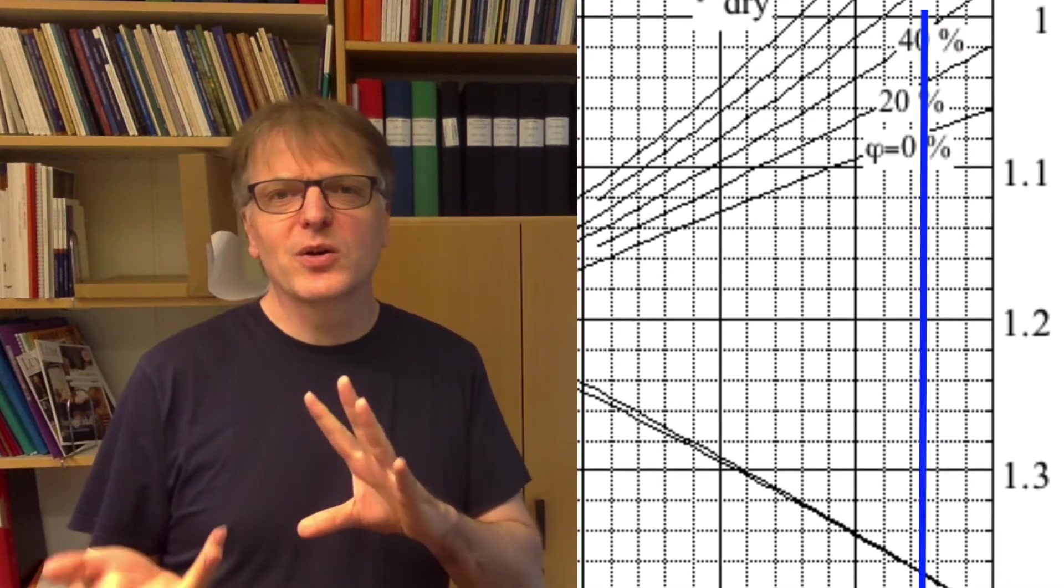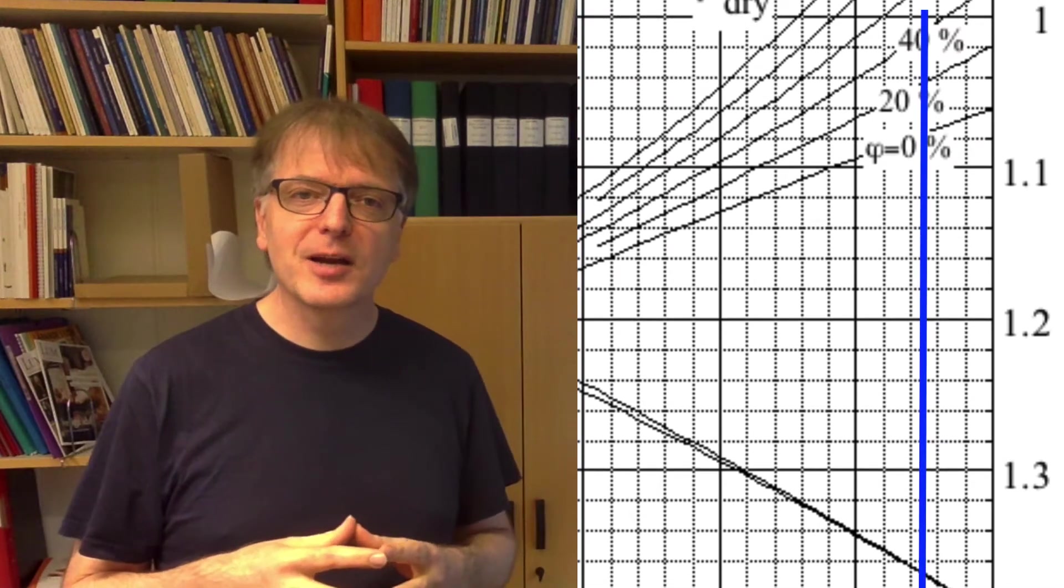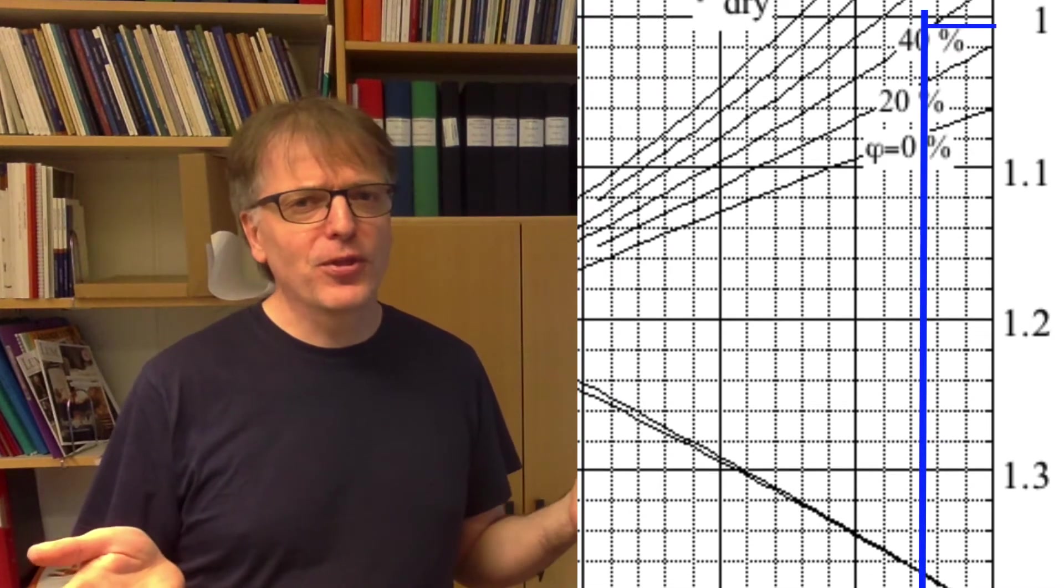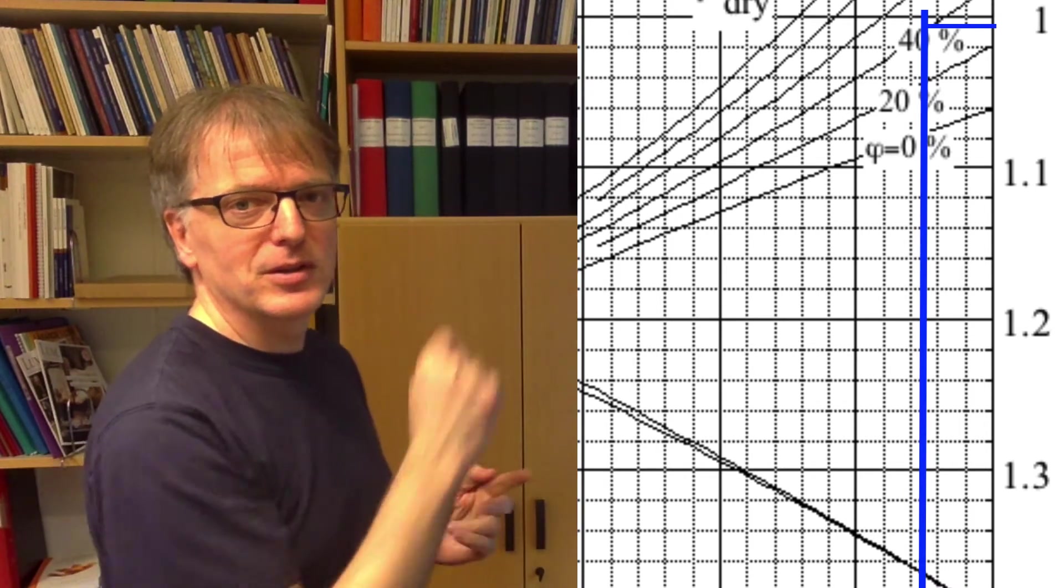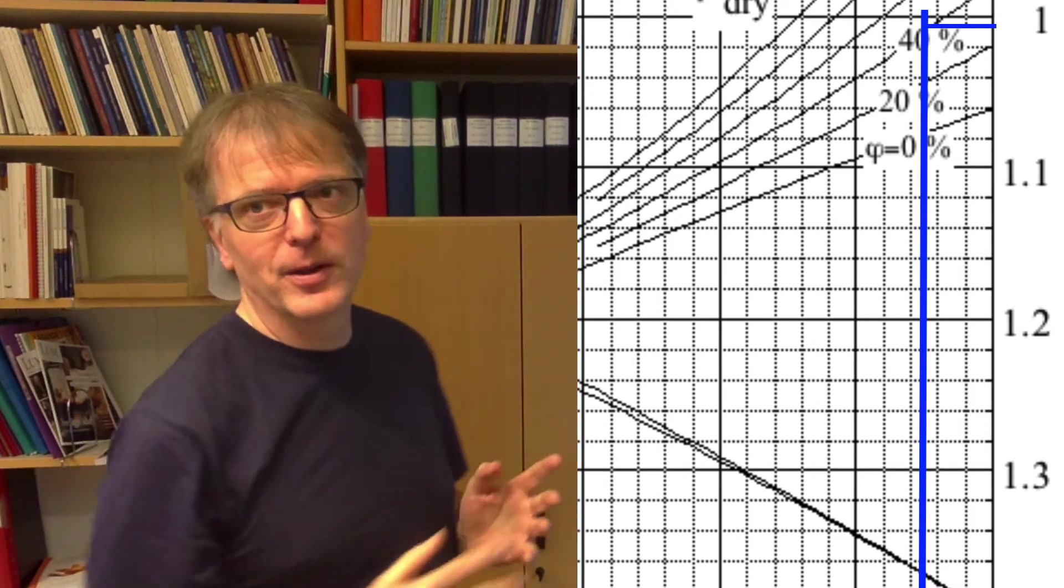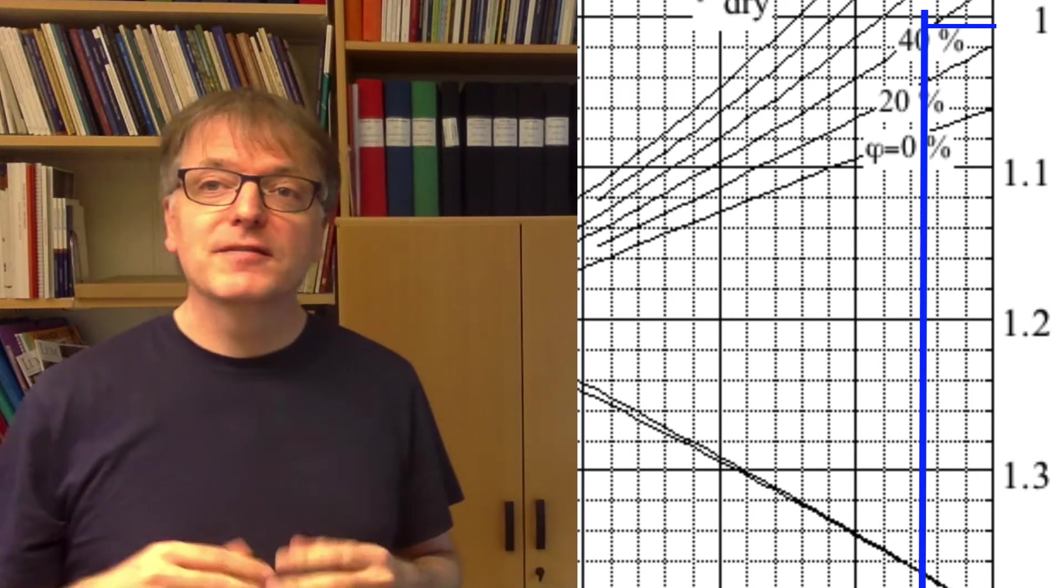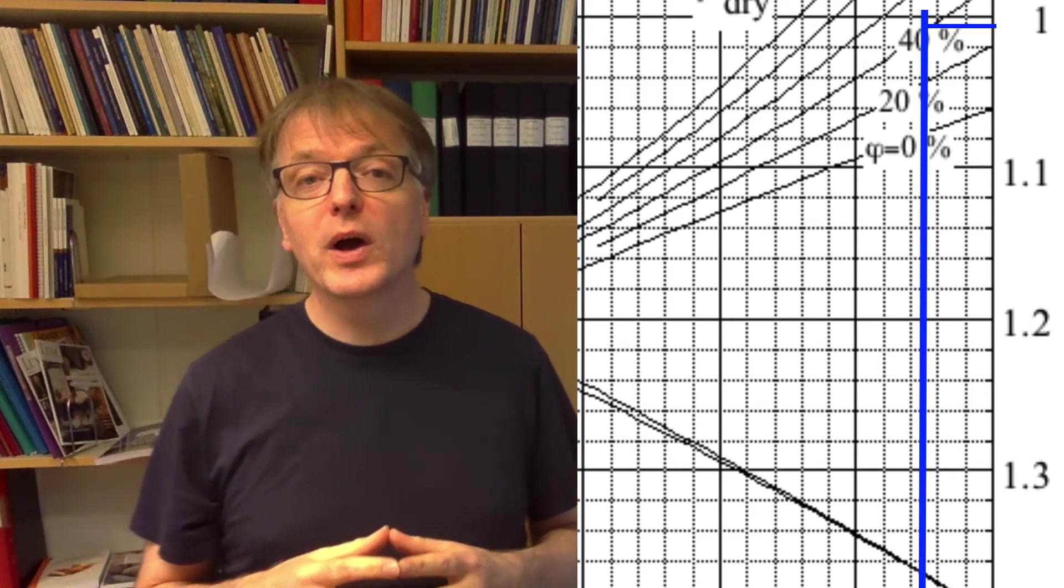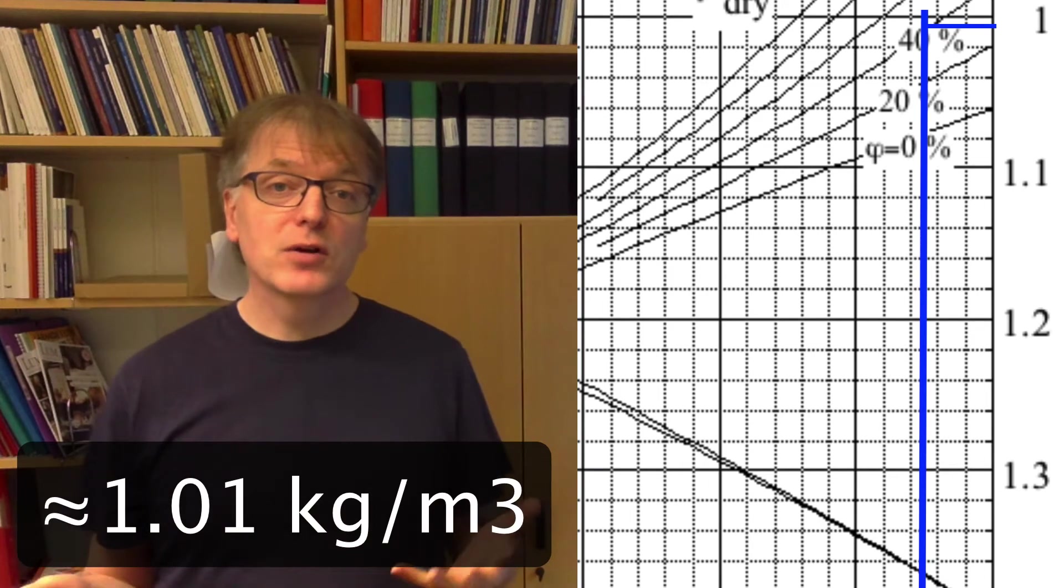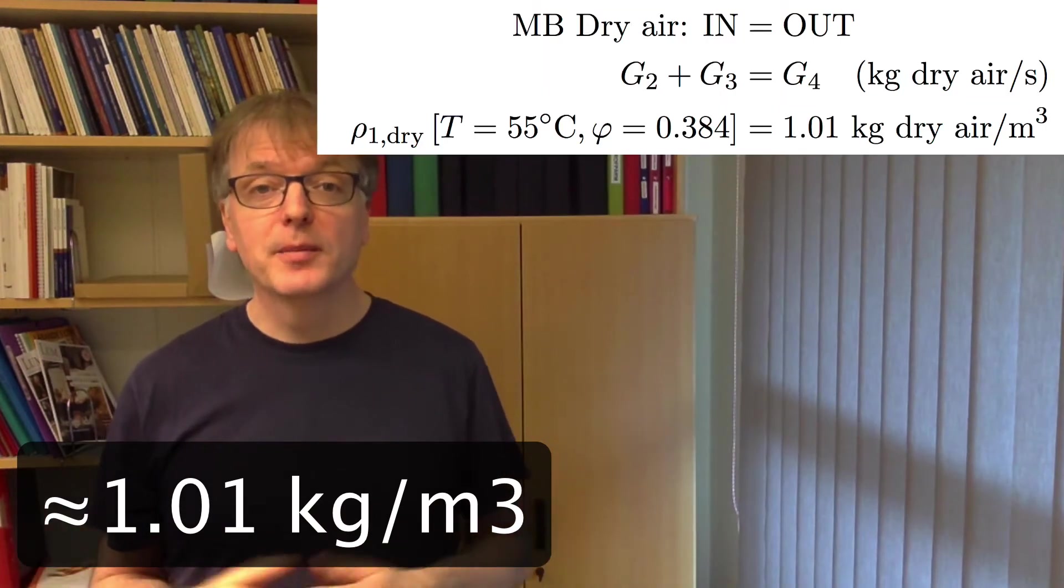And then I go up to the graphs for dry density. And 38 percent, we can't measure that exactly in the diagram, but 0.38 is approximately the same as 0.4, so you mark that point there. And then we go out to the density and find that to be 1.01.